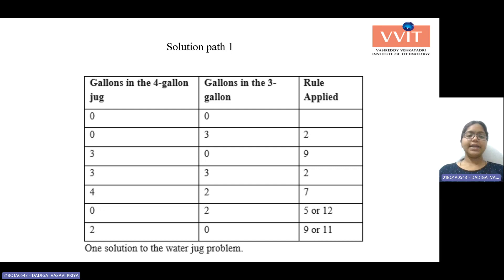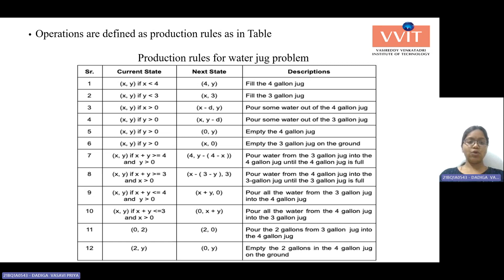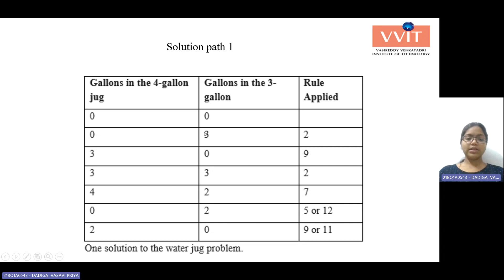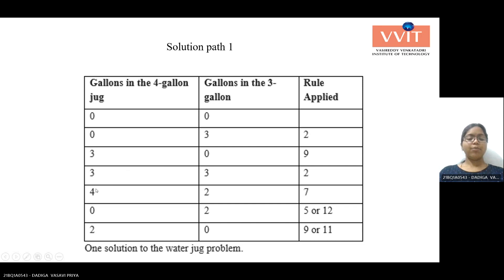This is solution path 1. Initially the 4-liter jug is 0 and the 3-liter jug is 0. I have filled the 3-liter jug using rule 2, then poured this 3-liter jug into the 4-liter jug, giving us 3 comma 0 — the 3-liter jug becomes empty by using rule 9. I then fill the 3-liter jug again using rule 2. Now the 4-liter jug has 3 liters. Next, I pour 1 liter from the 3-liter jug into the 4-liter jug until it is full, so we get 4 comma 2. This is done using rule 7.